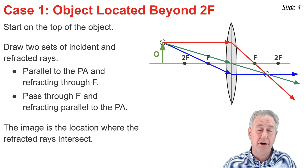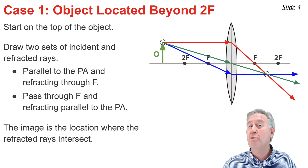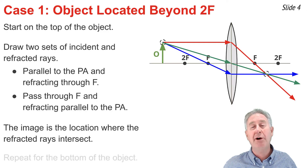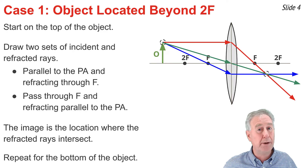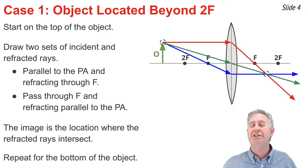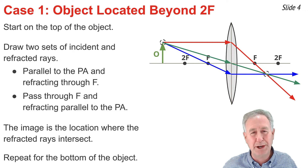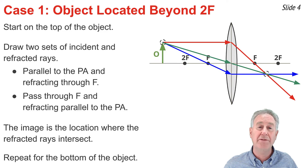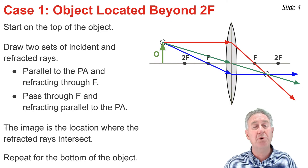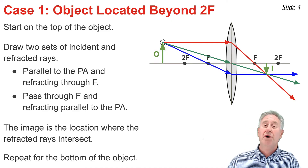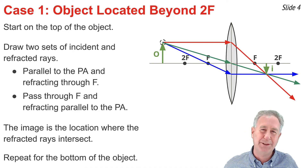This intersection point becomes the image of the top of the object. I've drawn two of the three possible sets of incident and refracted rays; you could draw the third, and not surprisingly it also passes through the same intersection point. Now I need to repeat the procedure for the bottom of the object. Since the bottom of the object is on the principal axis, the image of the bottom is also on the principal axis. So I can draw the complete image heading downwards to the intersection point, drawn and labeled I on the diagram.